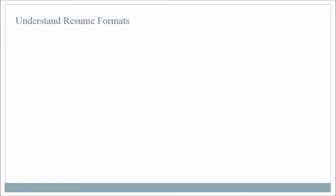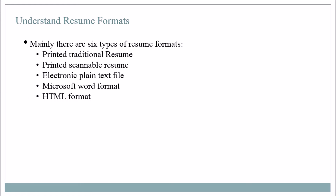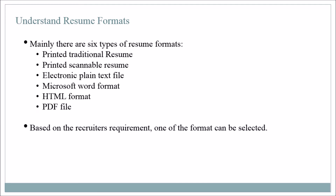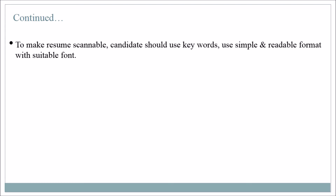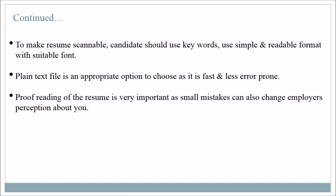Understand resume formats. There are mainly six types: printed traditional resume, printed scannable resume, electronic plain text file, Microsoft Word format, HTML format, and PDF file. Based on the recruiter's requirement, one of the formats can be selected. To make a resume scannable, candidates should use keywords and a simple, readable format with a suitable font. Plain text file is an appropriate option as it is fast and less error prone. Proofreading of the resume is very important, as small mistakes can also change the employer's perception about you.